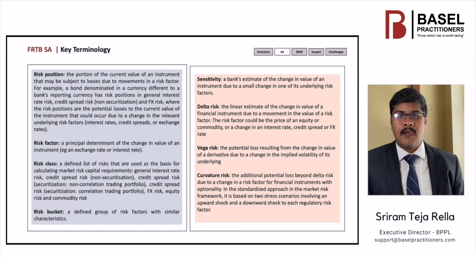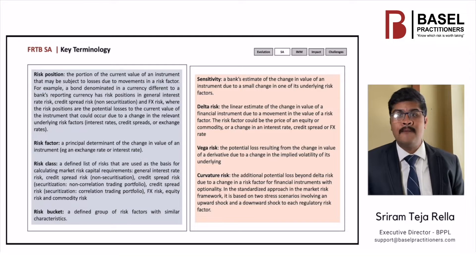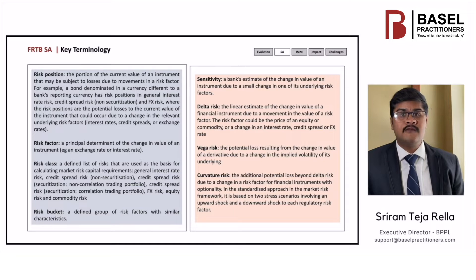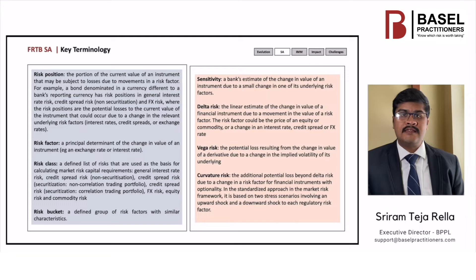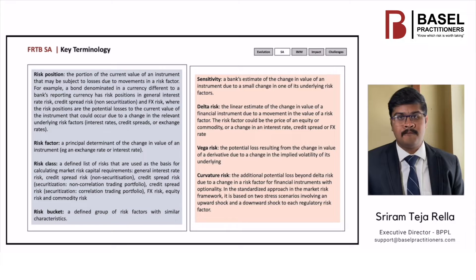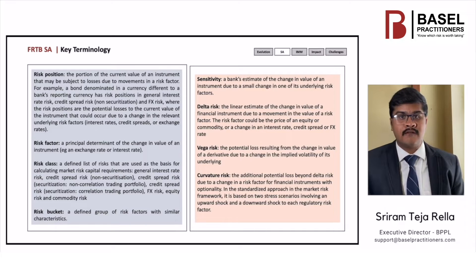A risk class is a grouping concept like Basel asset classes in credit risk. These classes are proposed mainly based on the risk drivers or risk factors. A risk bucket is visualized as a subgroup within each risk class. Sensitivity is the change in value of the instrument for a unit change in the risk driver. Now coming on to delta risk, vega risk, and curvature risk.